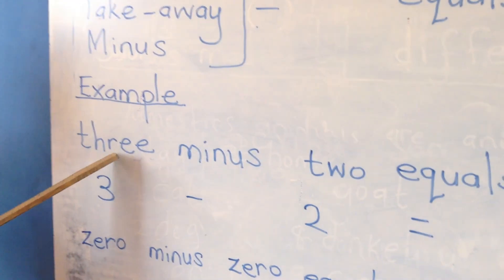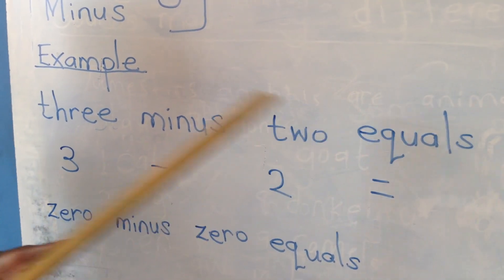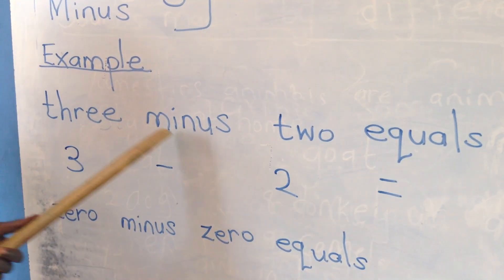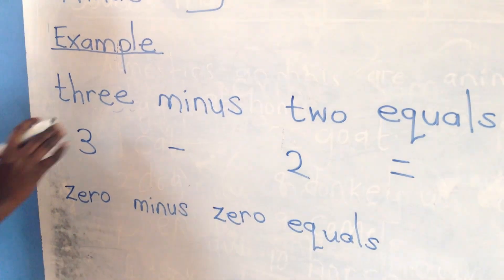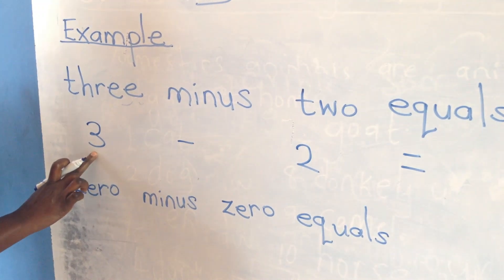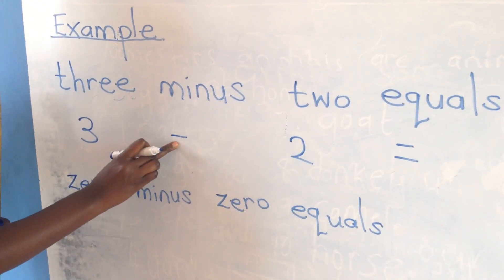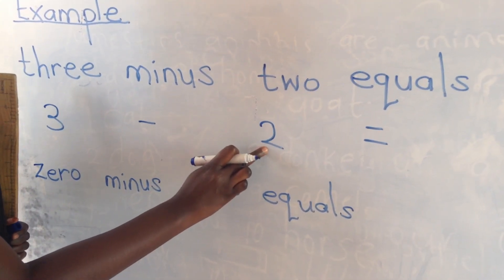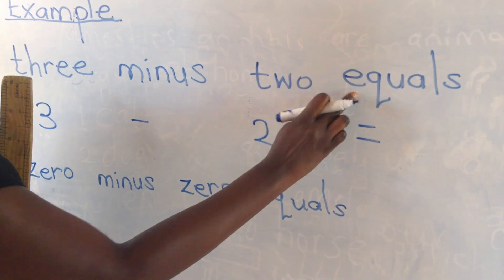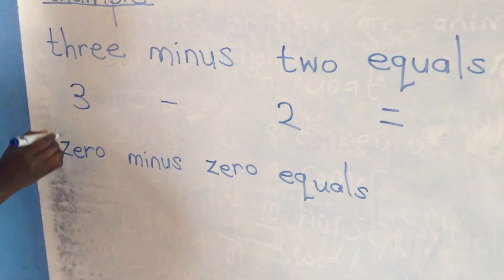Example, three minus two equals, in words, three minus two equals. The word three, you write number three. The word minus, you write the sign minus. The word two, you write number two. The word equals, you write the sign equals.